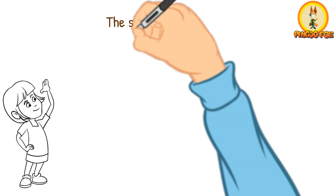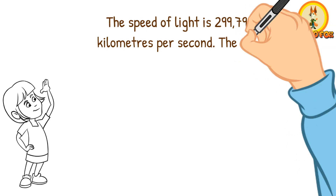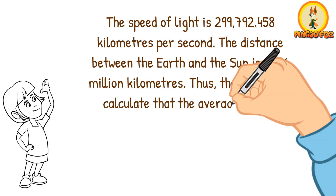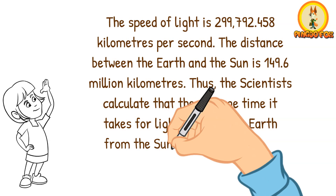The speed of light is 299,792.458 km per second. The distance between the Earth and the sun is 149.6 million km. Thus, scientists calculate that the average time it takes for light to reach the Earth from the sun is 8 minutes and 20 seconds.